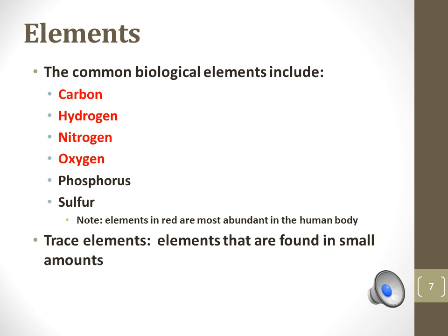Phosphorus and sulfur are also important in the structure of lipids, proteins, and nucleic acids. Trace elements are those found in a small percentage, such as iron, that is important to the delivery of oxygen from your lungs to your body.